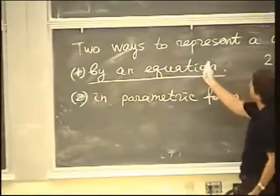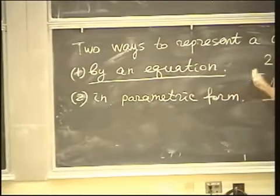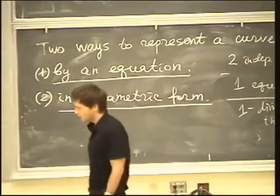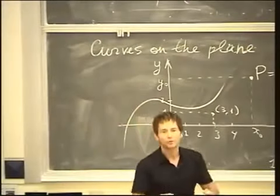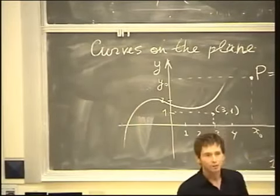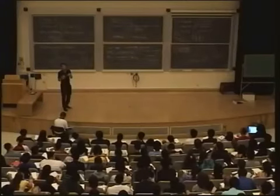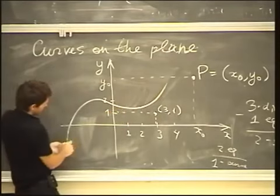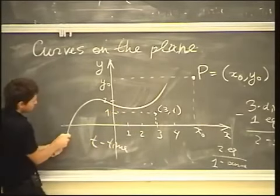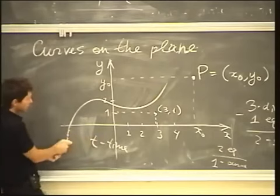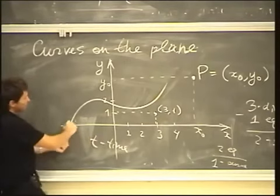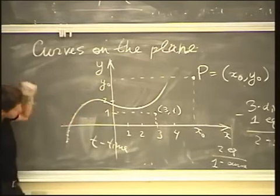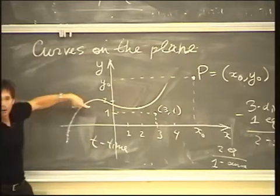That's all about the first type of representation of a curve on the plane — we can represent it by an equation. But there's also a second way, which is equally important if not more important, and that's called parametric form. The idea is that instead of trying to find a constraint which x and y satisfy, like x squared plus y squared equals one, we introduce an additional variable which we usually call t, like time. We think of the curve as being traversed by a point-like object, and we look at the position of this object on the plane as time goes by.